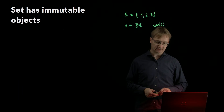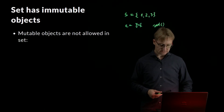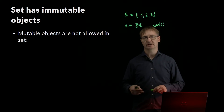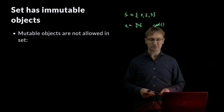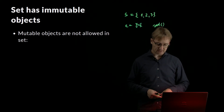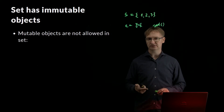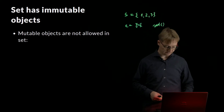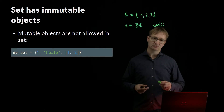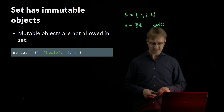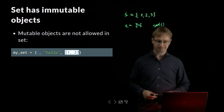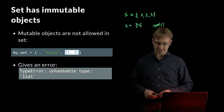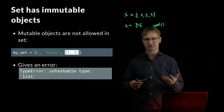A SET can only have immutable objects, which are those that cannot be changed during the lifecycle of the program. Mutable objects, which can be changed, include lists, dictionaries, and SET itself. So if I try to create a SET with three elements — number one, the string 'hello', and a list — I get an error, because I cannot use a list inside a SET.